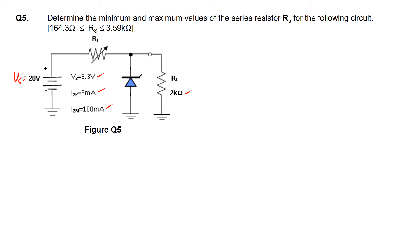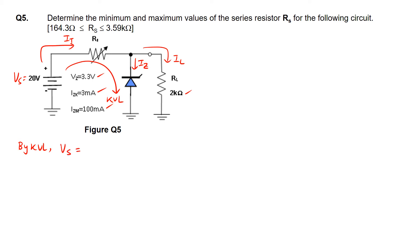Let me place the current parameters on the circuit. Coming out from voltage source Vs is the total current It, which splits into two branches: Iz going into the Zener diode, and Il going into the load resistor. By KVL in the loop, Vs equals the voltage across RS plus Vz — that is, Vs equals Vrs plus Vz, meaning Vs equals It times RS plus Vz.